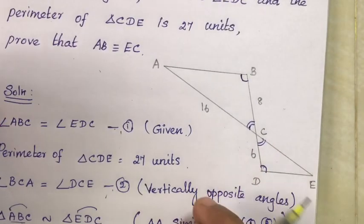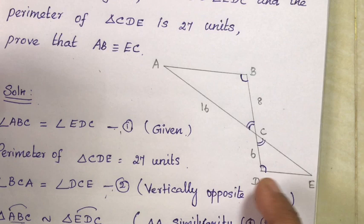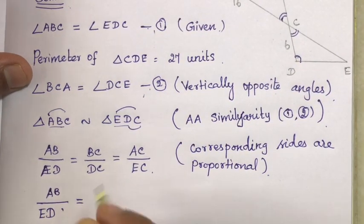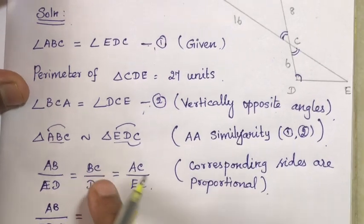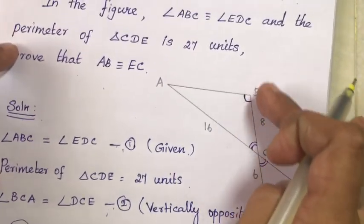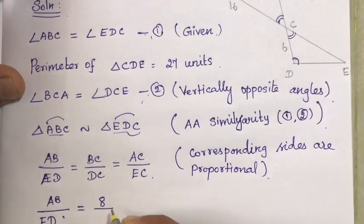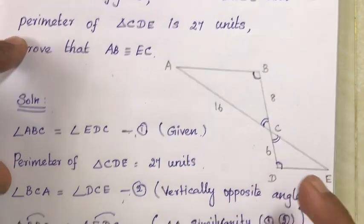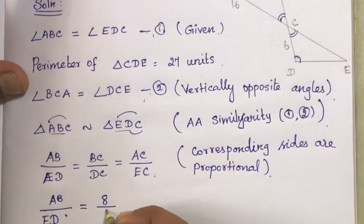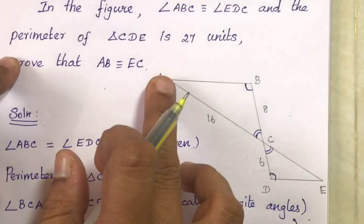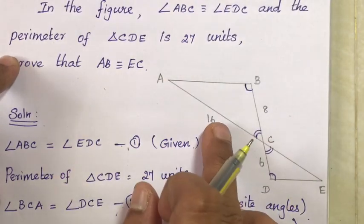So AB by ED is equal to BC by DC, which is equal to AC by EC. Substituting the known values: BC equals 8, DC equals 6, AC equals 16.